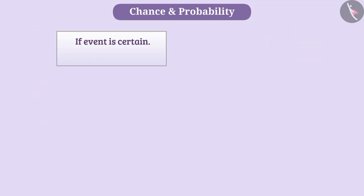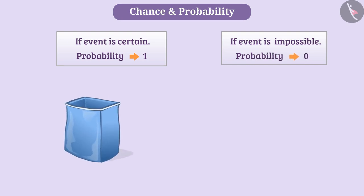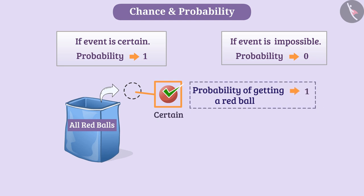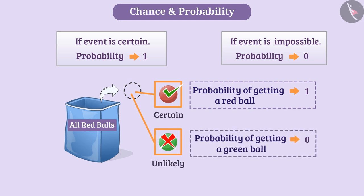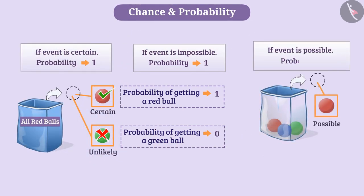If the outcome of an event is certain, the probability of that event is 1. And if the event is impossible, its probability is 0. Like, in a bag containing all red balls, if a ball is taken out, it will be a red ball, so the probability of getting a red ball is 1. But it is absolutely unlikely to be a green ball, so the probability of getting a green ball is 0. When the event is likely to occur, the probability is greater than 0 and less than 1.